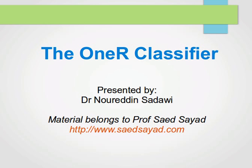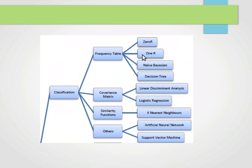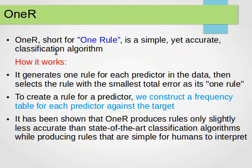The 1R classifier is another classifier based on the frequency table, and the name says it all — 1R is short for 'one rule.' Instead of ignoring all the predictors, it only chooses one predictor and uses it for classification. It's a simple yet accurate classification algorithm.